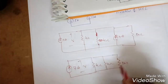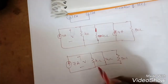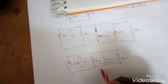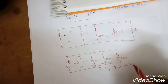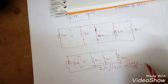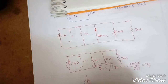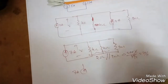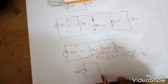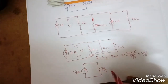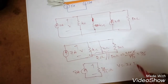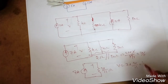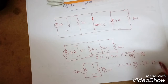Now three resistances are in parallel. Two resistances are the same, so their equivalent is 2 ohms. Then 2 ohms in parallel with 20 ohms gives (20 × 2) / 22 = 20/11 ohms as the total equivalent resistance. By Ohm's law, V = 7 × (20/11).